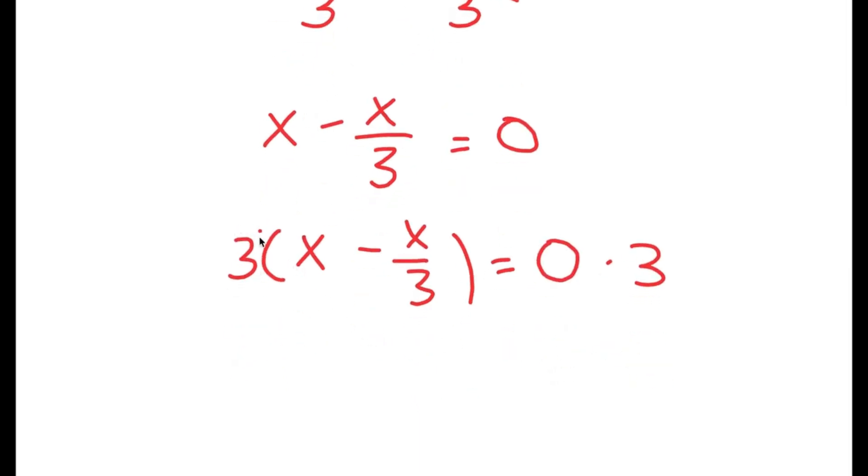Now, I have to actually distribute the 3 and multiply it with all my terms in my parentheses. So 3 times x is 3x, and 3 times negative x over 3. Well, this 3 and this 3 cancel out, so all I'm left with is negative x. And 0 times 3 is 0.